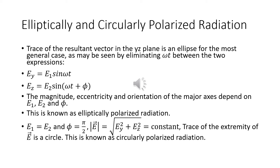The magnitude, eccentricity and orientation of the major axes depends upon E₁, E₂ and φ — this is known as elliptically polarized radiation. If E₁ = E₂ and φ = π/2, then the magnitude of E = √(Ey² + Ez²) is a constant and the trace of the extremity of E is a circle, so this is known as circularly polarized radiation.